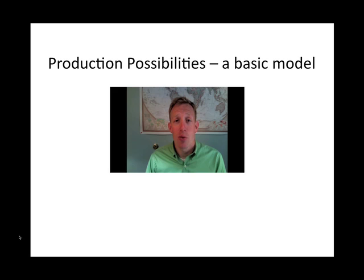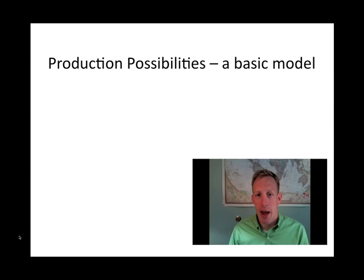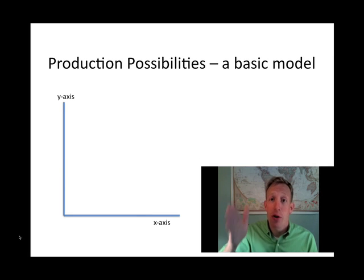In the production possibilities model we assume that someone is able to produce two goods or maybe two categories of goods. One of these we put on the x-axis of the graph or the axis going horizontally. And the other we put on the y-axis or the axis that's going vertically, up and down.